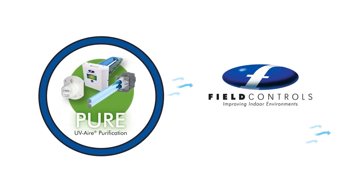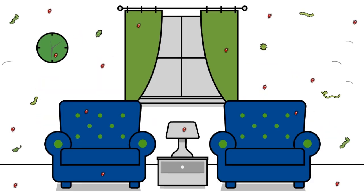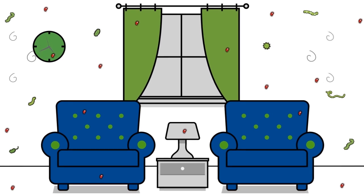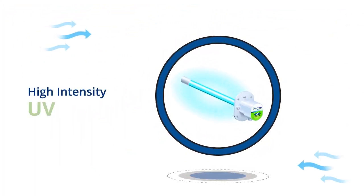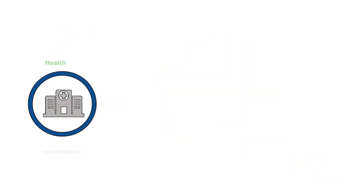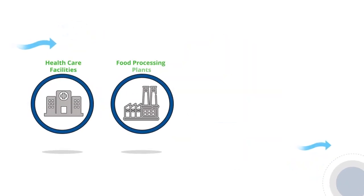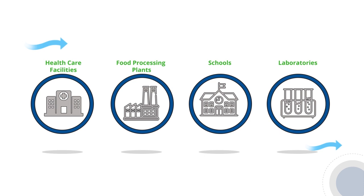Ultraviolet energy waves generated by UV lamp technology are lethal to the microorganisms found in indoor air. In fact, the treatment of indoor air with UV generating lamps has been successful in health care facilities, food processing plants, schools, laboratories and other applications.